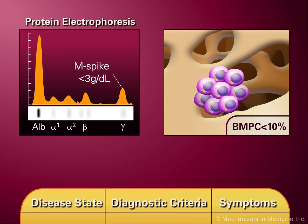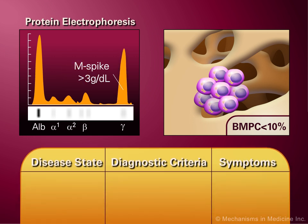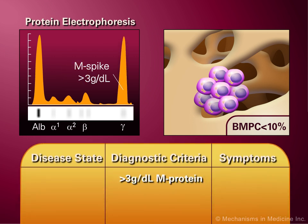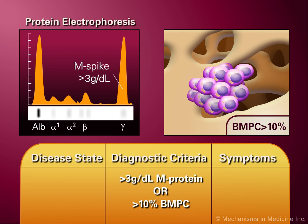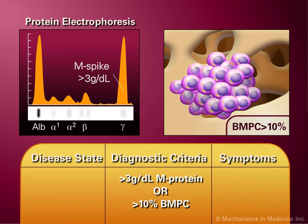In contrast, if either the M-protein is higher than 3 grams per deciliter, or if more than 10% of the bone marrow population includes plasma cells, then smoldering myeloma is diagnosed.